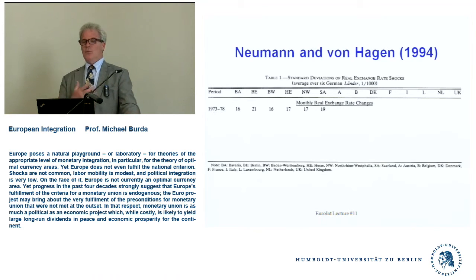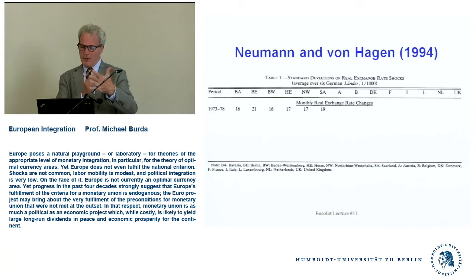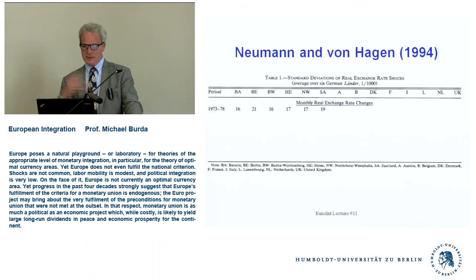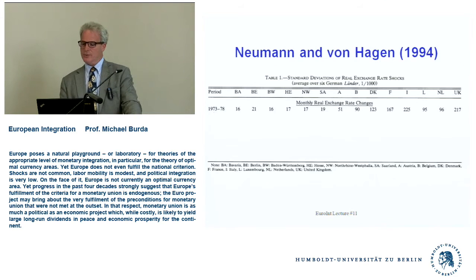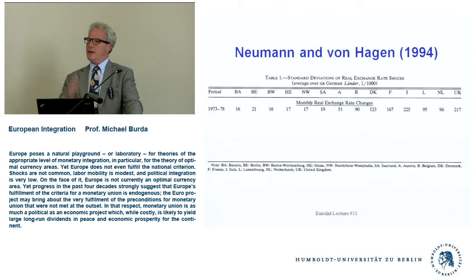For countries with their own currencies, these are huge numbers. Britain shows a 217% standard deviation of the average real exchange rate of Bavaria, Baden-Württemberg, Hesse, North Rhine-Westphalia, and Saarland with the UK. That doesn't look like a very stable arrangement at all, compared to the variability within Germany's common currency area.